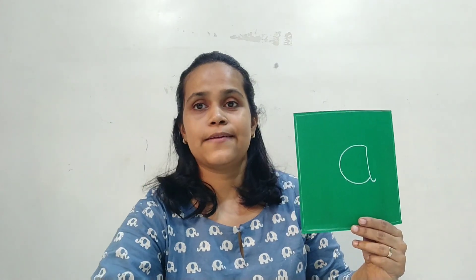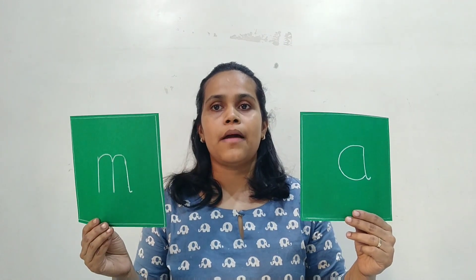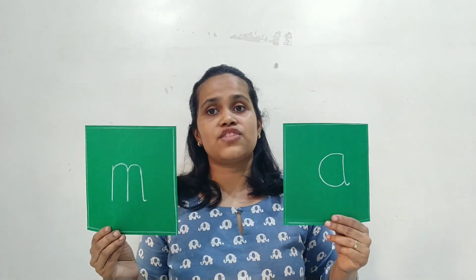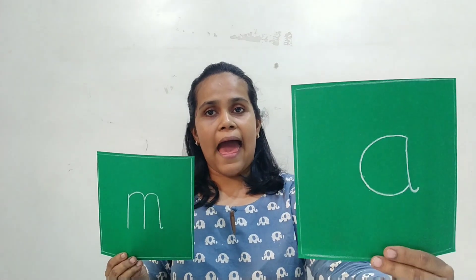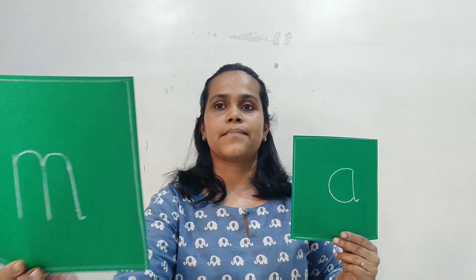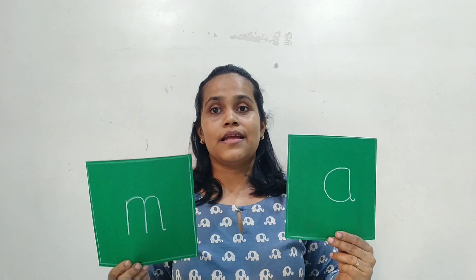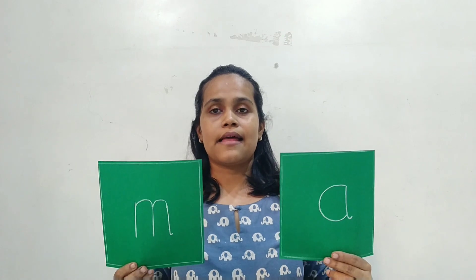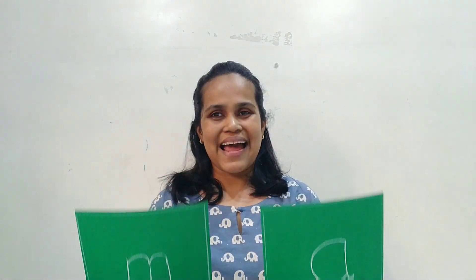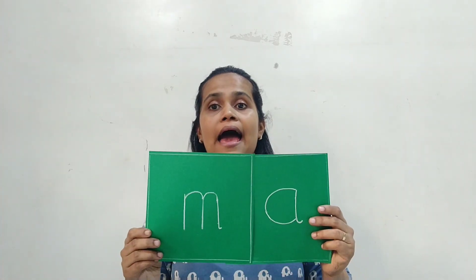Which sound is this? Ah. Right. Now which sound is this? Mmm. Right. So as I move each flashcard forward, you have to tell me that sound. We will start with: Ah... Mmm. Now let's say it together: Am. Again — Ah, Mmm, Am. Right. This was the letter 'AM'.